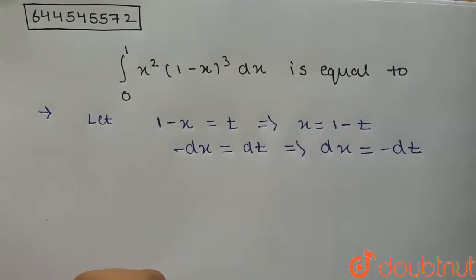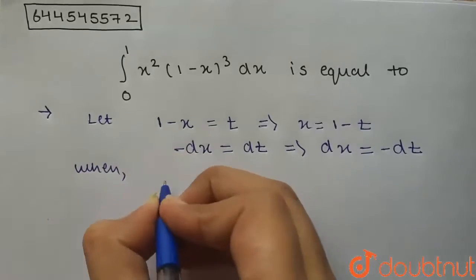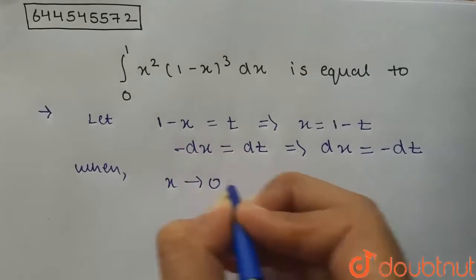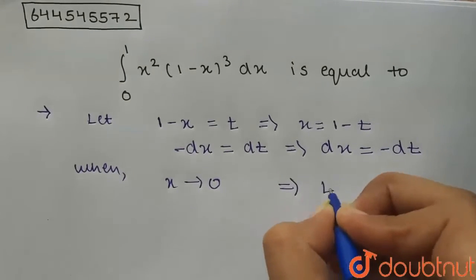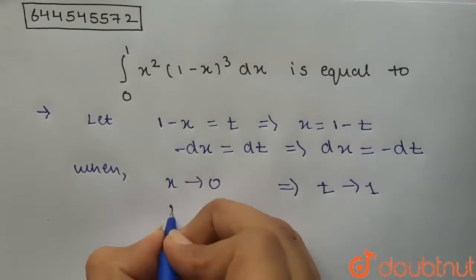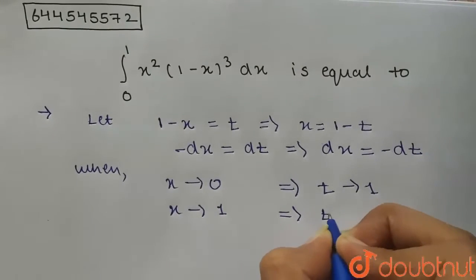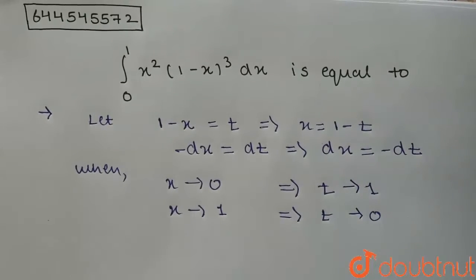Now because it's a definite integral, the limits will change. When x tends to 0, t tends to 1, and when x tends to 1, t tends to 0.